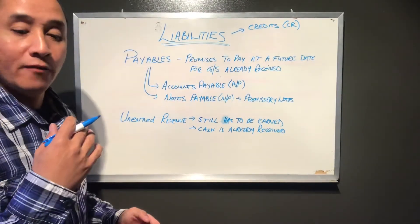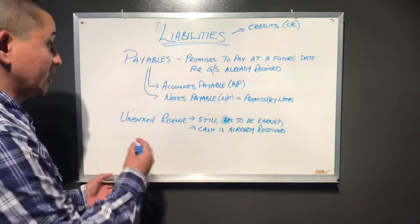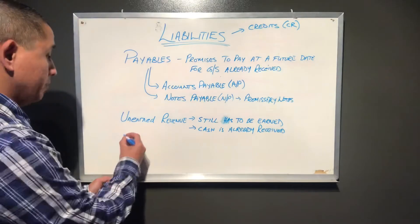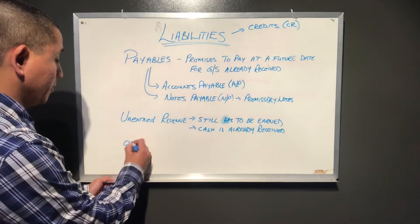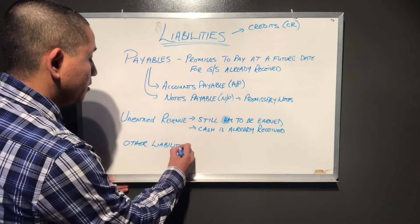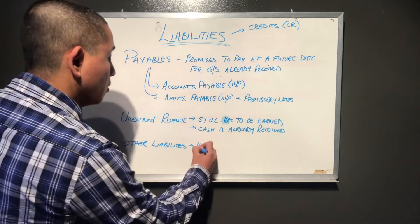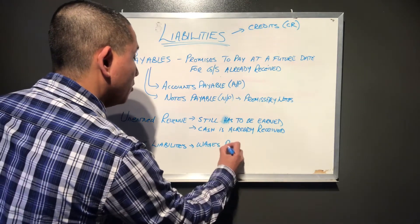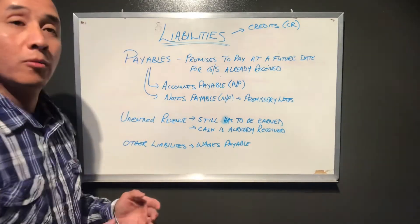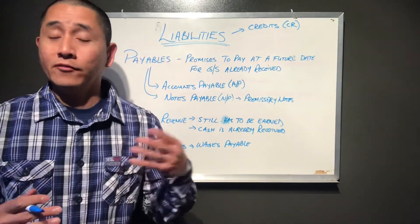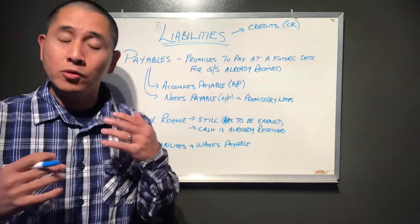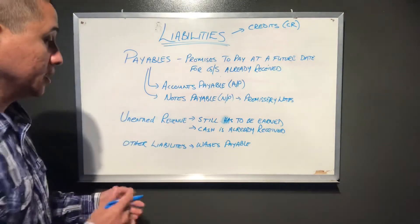The last classification — and this is not a comprehensive list — would be other liabilities. These could include things such as wages payable. If you have a company and your employees have already worked for you and devoted their time, you owe them that money, so it's a promise to pay your employees.